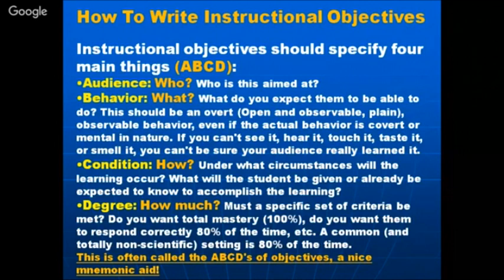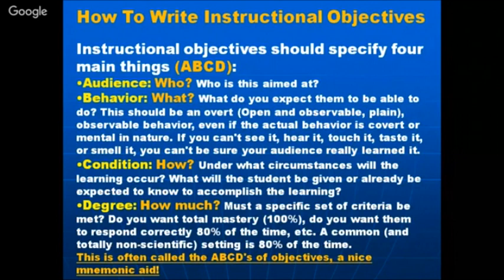So the ABCD formula: audience — who is the person; behavior — what you expect at the end of instruction; condition — under what circumstances he will display that behavior; and degree — how much mastery he is able to consistently display in that skill, knowledge, or attitude. Depending on the level and type of courses, you fix the appropriate degree of mastery.